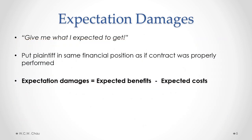With expectation damages, we're compensating the innocent party to put that innocent party, or the plaintiff, in the same financial position as if the contract had been properly performed. The mathematical equation is: expectation damages equals expected benefits minus expected costs. The expected benefits are the benefits that would have been received if the contract had been performed, and the expected costs are the costs the innocent party would have incurred if the contract had been properly performed.